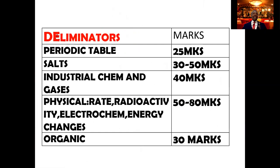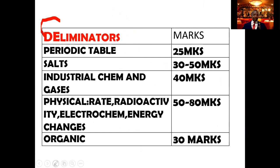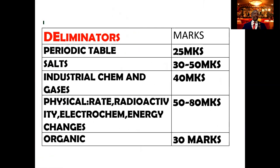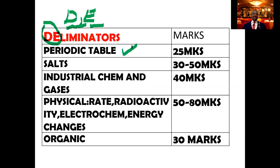Now we look at topics I call the 'DELIMITATORS.' The D and E are written in capital letters because these are the D and E eliminator topics — when you focus on these particular topics, you eliminate the D grade and E grade. These topics can even eliminate the C grade. So any student, even the poor student, can easily achieve a mean grade above C in chemistry by mastering these topics.